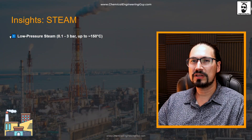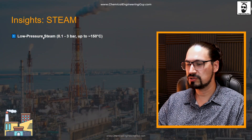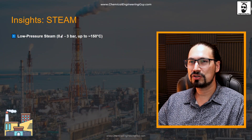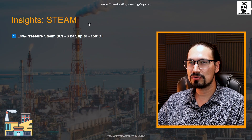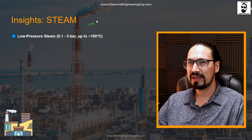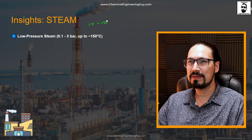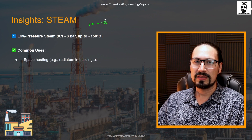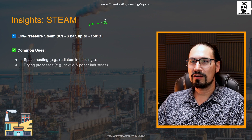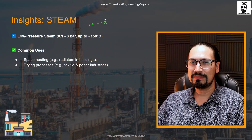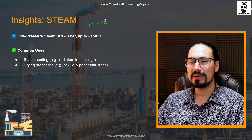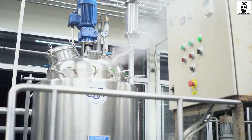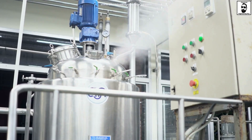We're going to focus our attention on low pressure steam, typically between 0.1 to 3 bars. Typical temperatures range from 110 all the way to 150 degrees. Once again, it really depends on the industry. Common uses include space heating and radiators in buildings, such as maintaining temperature in winter.